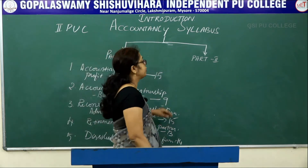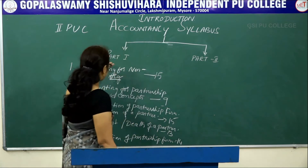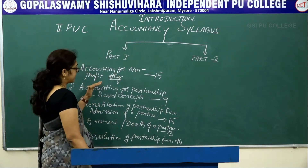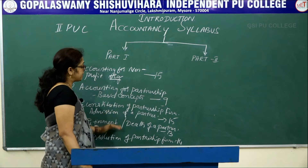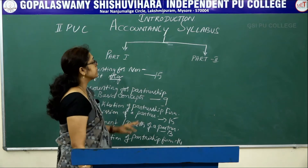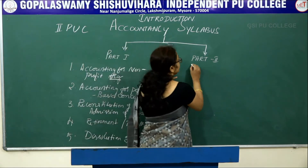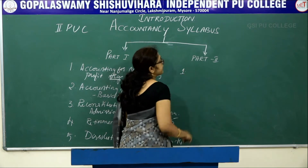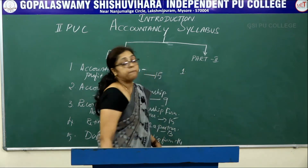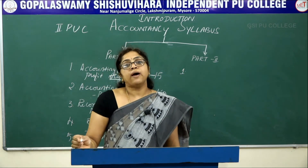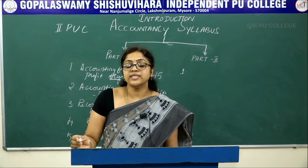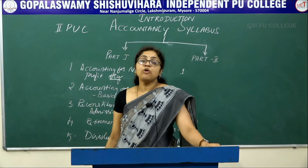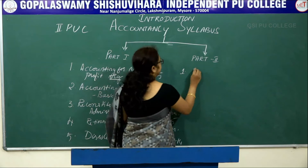Part 1, from Chapter 2 to Chapter 5, is purely partnership accounts. Part 2 is purely company accounts. Under Part 2, the first chapter is Accounting for Share Capital.